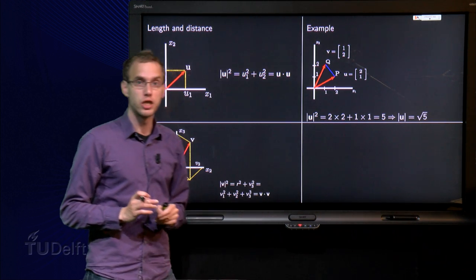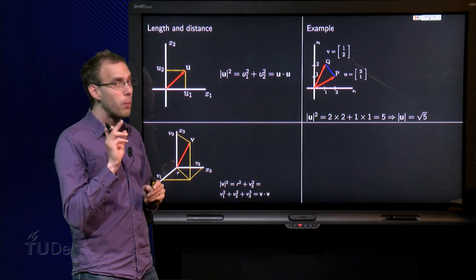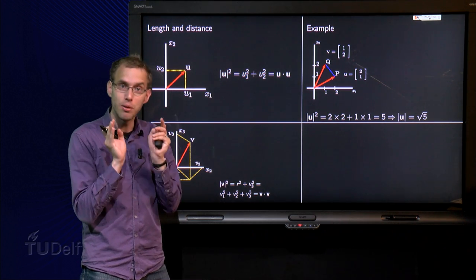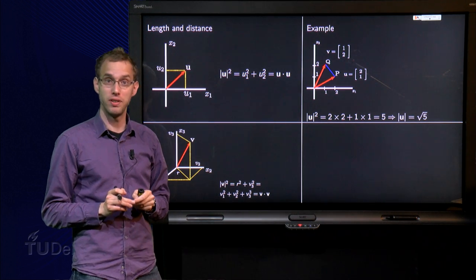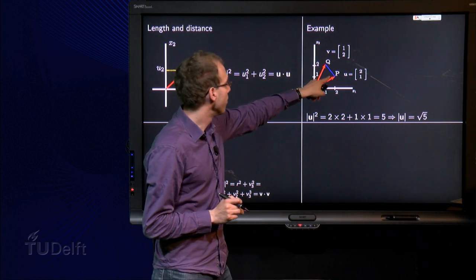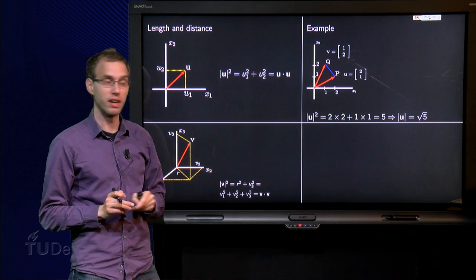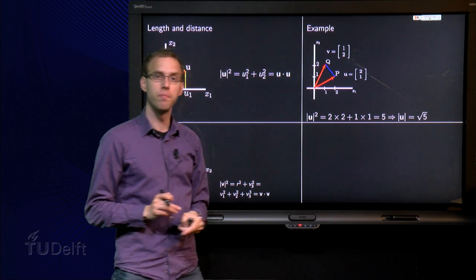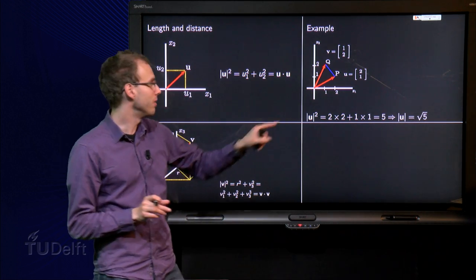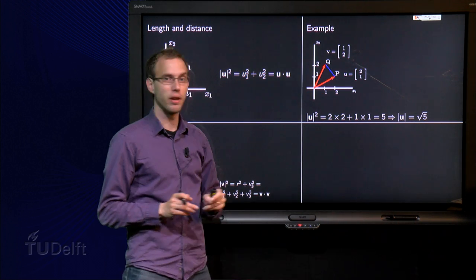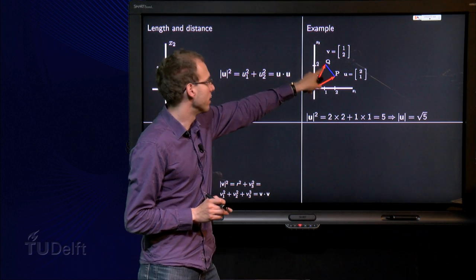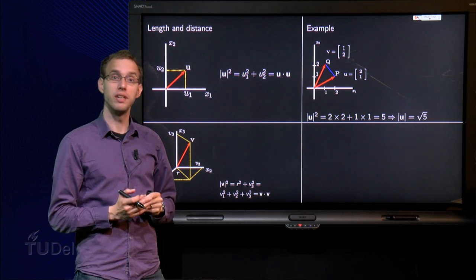So the length equals the square root of 5. We can do even more. If we can compute length, we can also compute distances. For example, the distance between p and q by forming this blue vector over here from p to q. So the distance from p to q is exactly the length of this blue vector. Let's call that one w. If you know this length, then you know the distance from p to q.